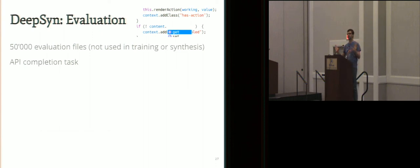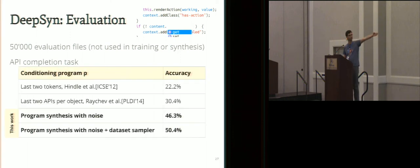We took some files that we didn't use in training or synthesis. We wanted to evaluate how well we predict back the API. We delete some API from the code and check how precise we are. This is API completion task. Previous models have fairly low accuracy, like 20-30%, so they're guessing one out of the APIs.